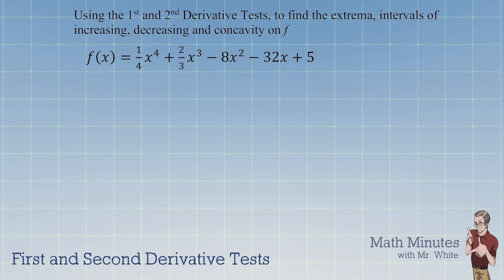We're going to take the first derivative, we're going to take the second derivative, we're going to do sign charts, and in the end, answer the question that you see here: all the extrema, increasing and decreasing intervals, as well as concavity. So let's jump in and look at that first derivative. This is a simple polynomial, so we'll just do the power rule throughout. The first derivative will be x to the third plus 2x squared minus 16x minus 32.